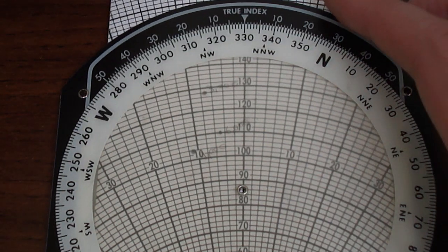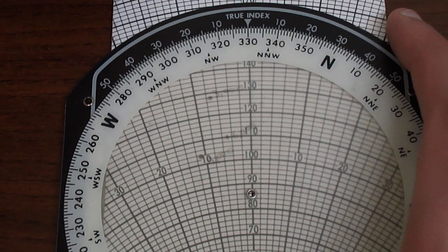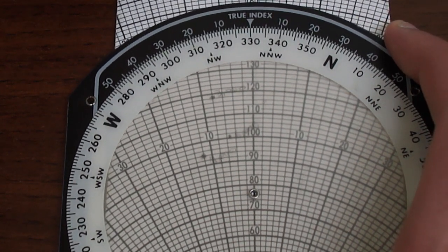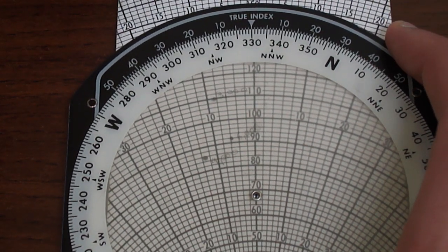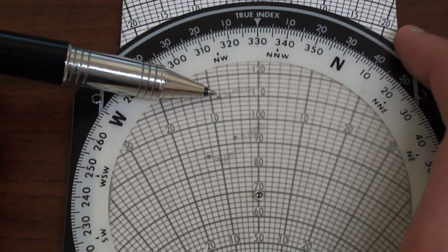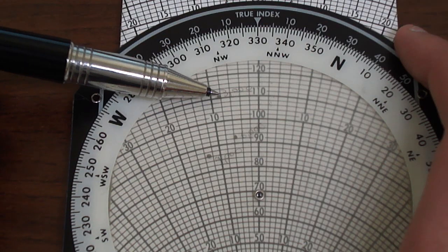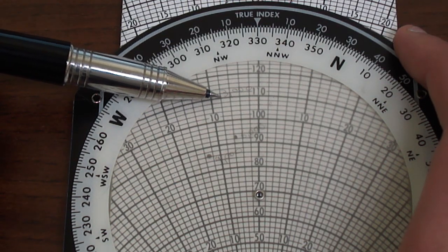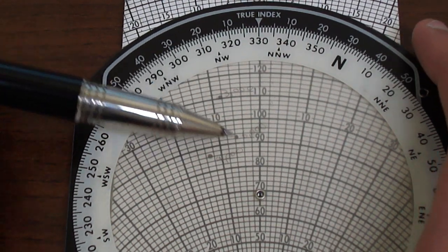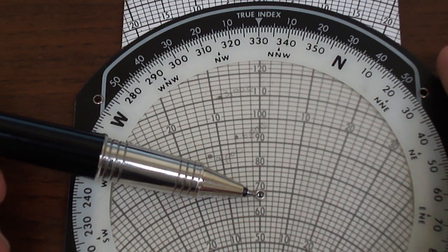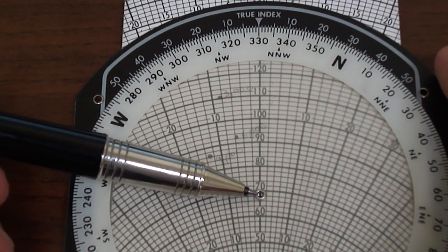And if we repeat again this time to the winds at 3,000 feet, we'll line up 3,000 feet with 110 knots. We'll see that we have a minus 8 wind correction angle in degrees, but our ground speed has suffered significantly and is now only 68 knots.